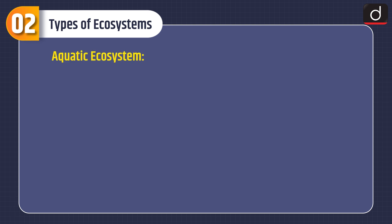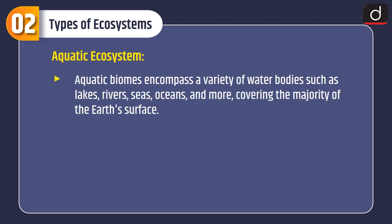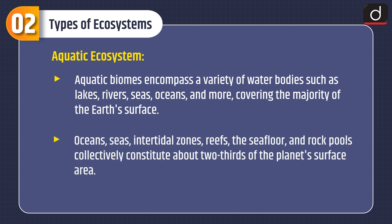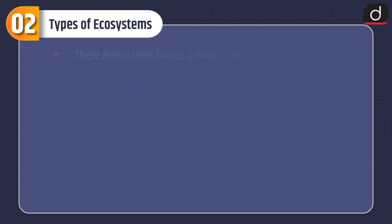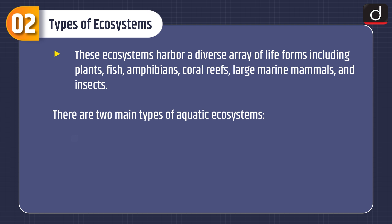First is the aquatic ecosystem. Aquatic biomes encompass a variety of water bodies such as lakes, rivers, seas, oceans and more, covering the majority of the earth's surface. Oceans, seas, intertidal zones, reefs, the seafloor and rock pools collectively constitute about two-thirds of the planet's surface area. These ecosystems harbour a diverse array of life forms including plants, fish, amphibians, coral reefs, large marine mammals and insects.